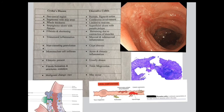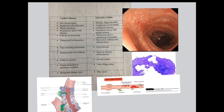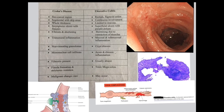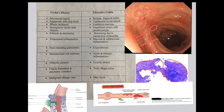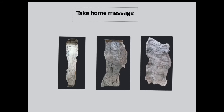Coming to the last part: Crohn's ulcers and ulcerative colitis. This is basically a theoretical part — we don't have a specimen. These are endoscopic pictures of ulcerative colitis, courtesy of Twitter Path Walker. You can see superficial ulcers in the endoscopic view of the colon, and the microscopic picture shows the epithelium with superficial ulcers. This is the picture of ulcerative colitis; the rest has been covered in theory.